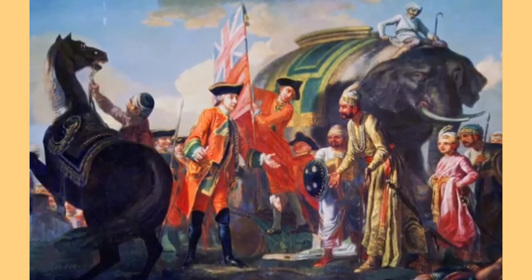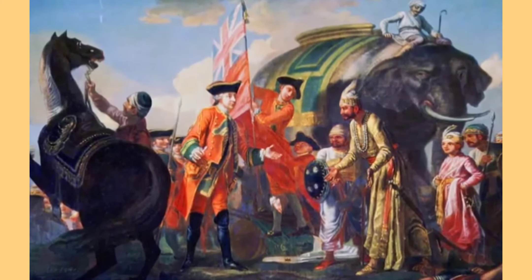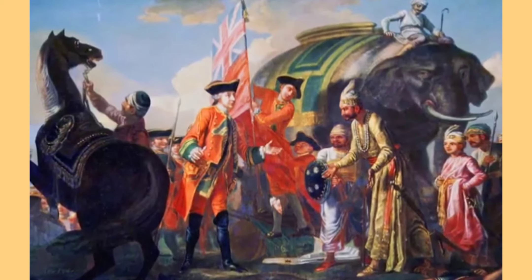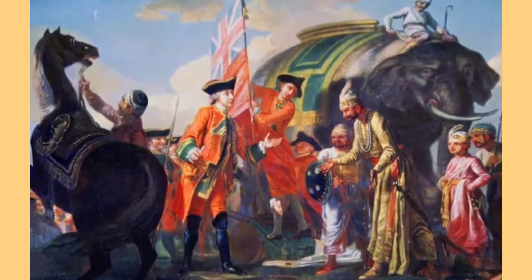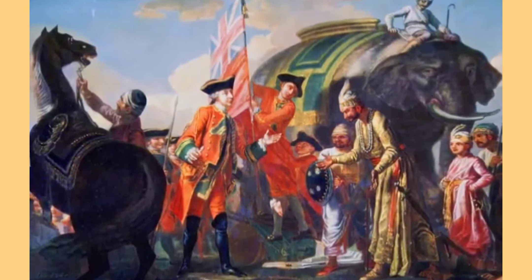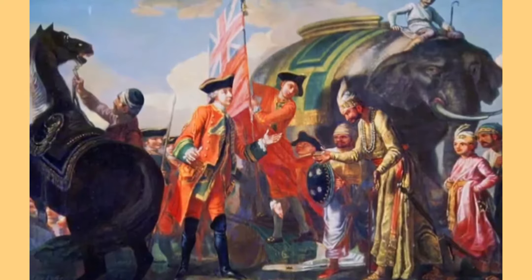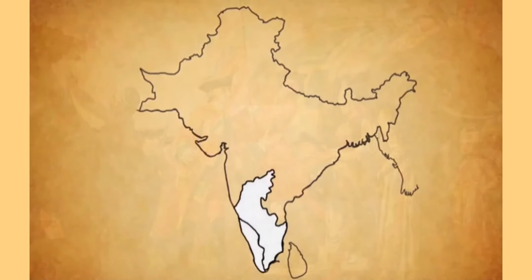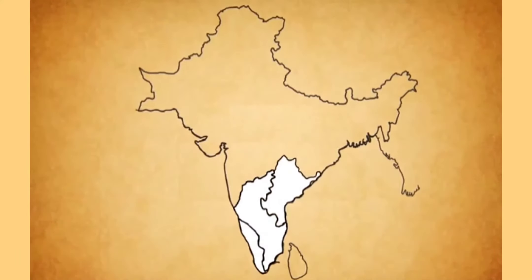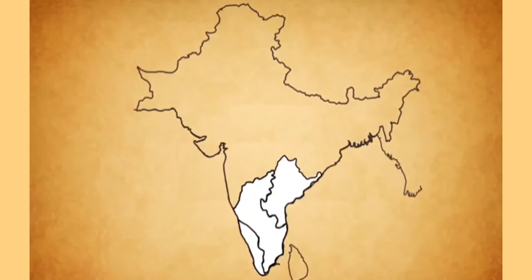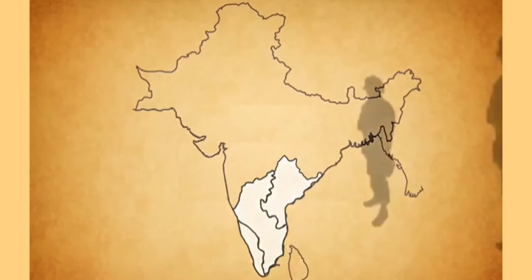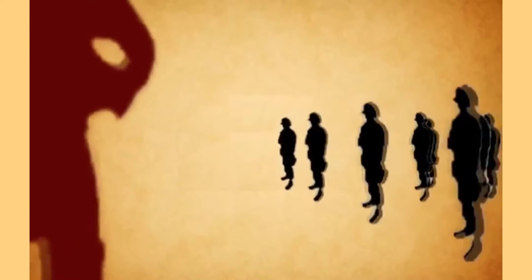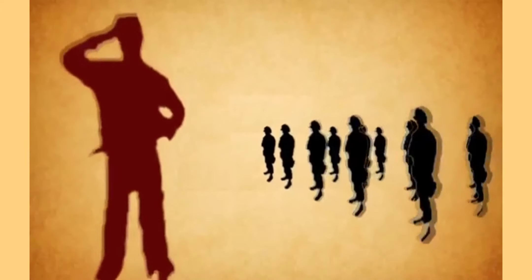Historians believe that the revolt failed due to the following reasons. The revolt was confined to only a few areas and did not spread to all parts of the country. Bengal, Assam, Orissa, Rajasthan, parts of Punjab, and South India remained untouched by the revolt. The revolt also did not get support from all sections of society.